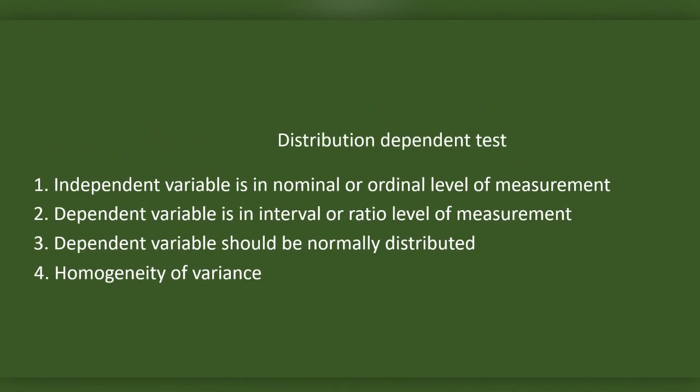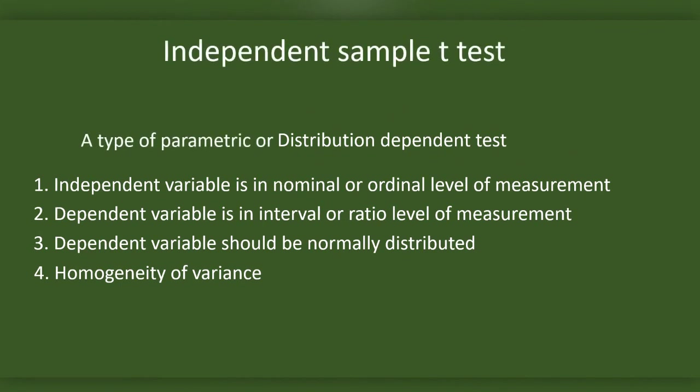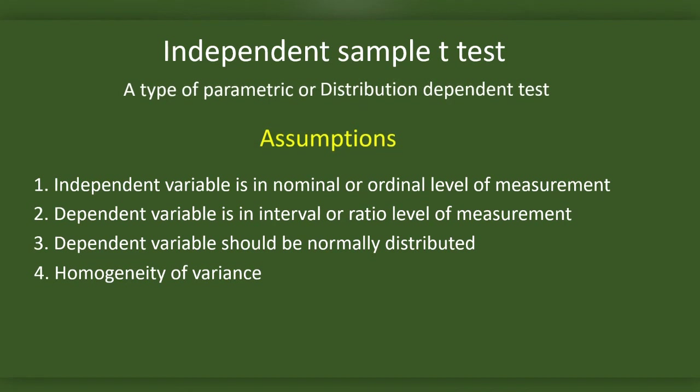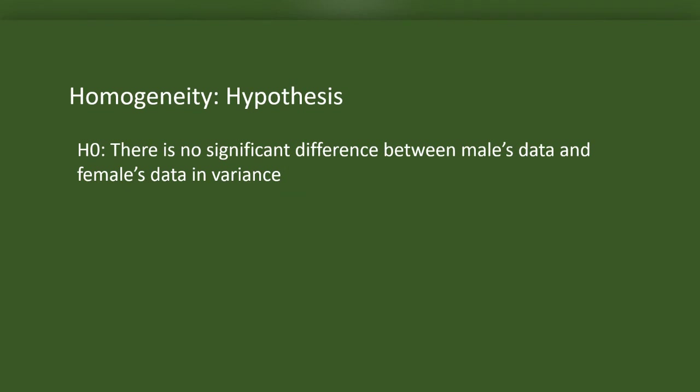Independent sample t-test thus depends on formalities related to the data distribution across the categories in the sample, so it is a distribution dependent test. Also, this is a parametric test. The test of the sample has to be normally distributed and should represent the population. These are the assumptions of independent sample t-test.